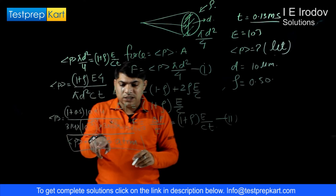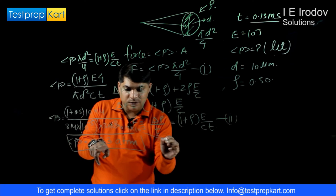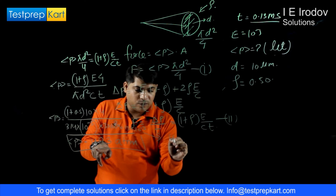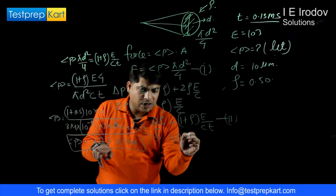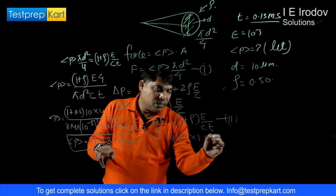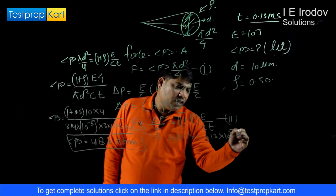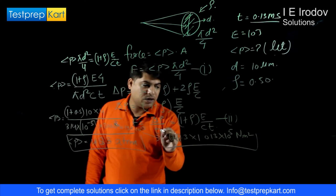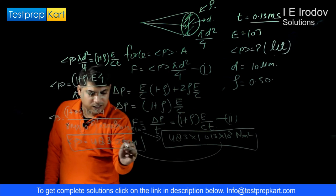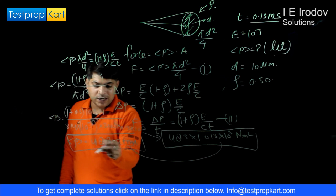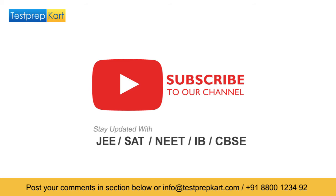You will not get exactly this digit. You will get digit in terms of something 4.83 into 10 to power 5 Newton per meter square. And we will convert this quantity into atmospheric pressure and then we will get this answer.